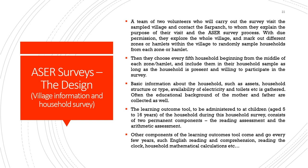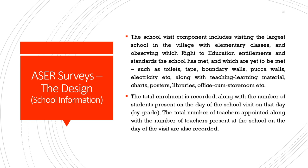Basic information about the household such as assets, household structure, availability of electricity and toilets, and the educational background of the mother and father are collected. The learning outcome tool administered to children consists of two permanent components — the reading assessment and the arithmetic assessment. Other components come and go every few years such as English reading and comprehension, knowing how to read a clock, and household mathematical calculations. The school visit component includes visiting the largest school in the village with elementary classes, observing which Right to Education entitlements the school has met — such as toilets, taps, boundary walls, electricity — along with teaching learning material, charts, posters, and libraries.